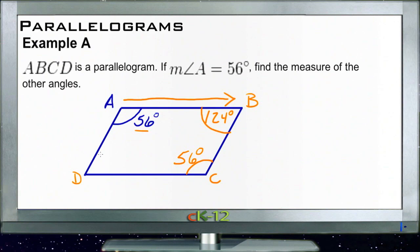And if it's 124 degrees, then its opposite, D, is also 124 degrees. And there we have all four angles. Alright, let's take a look at B.